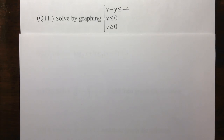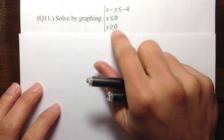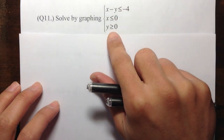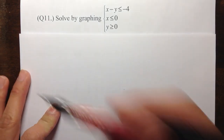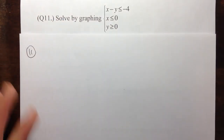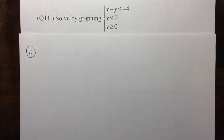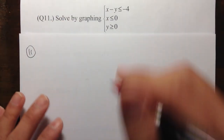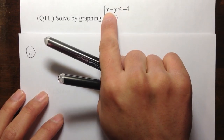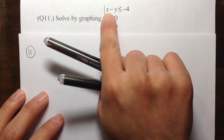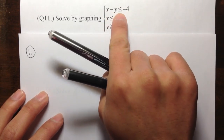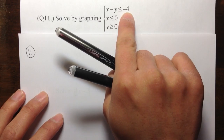We are going to do more graphs, and in this equation we are dealing with inequalities. Number 11 — let's take a look at the first equation. I have x minus y is less than or equal to negative 4.